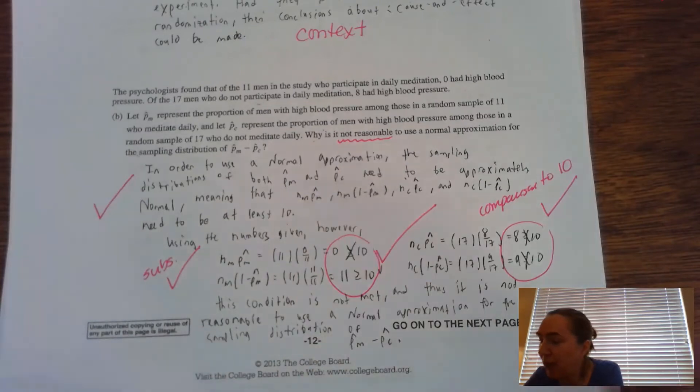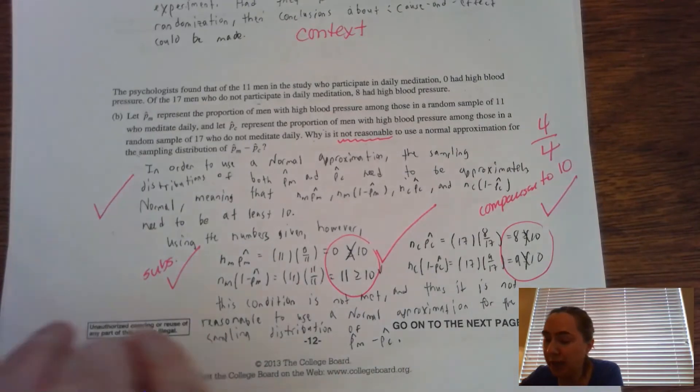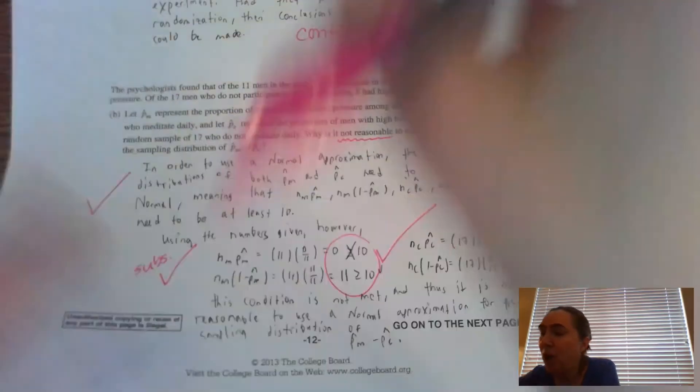So there are four checks right here. My person got all four of them, right? So there we go. Four out of four for this particular problem. Now, the hardest part about this problem is actually part C.